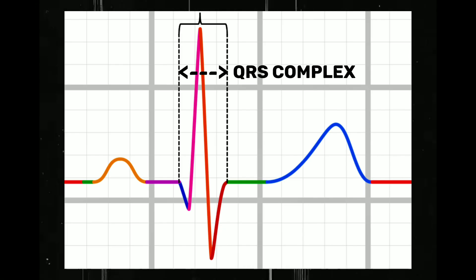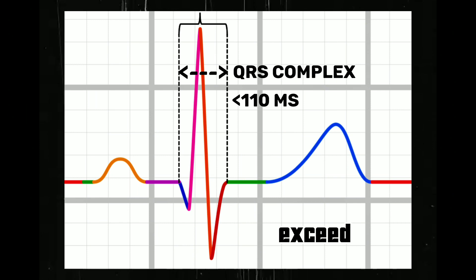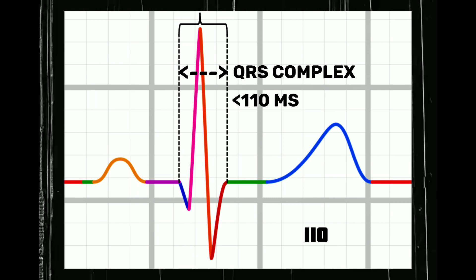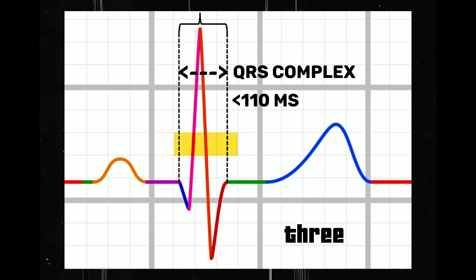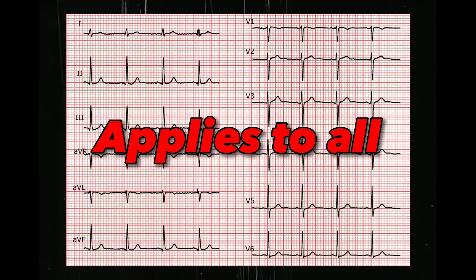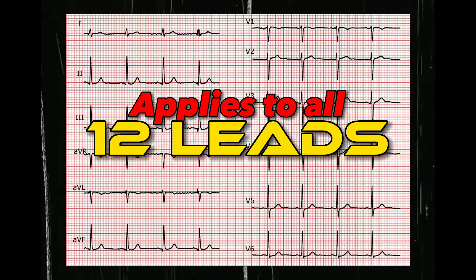Rule number 2: the width of the QRS complex should not exceed 110 milliseconds, or it should be less than 3 small squares. This also applies to all 12 leads.